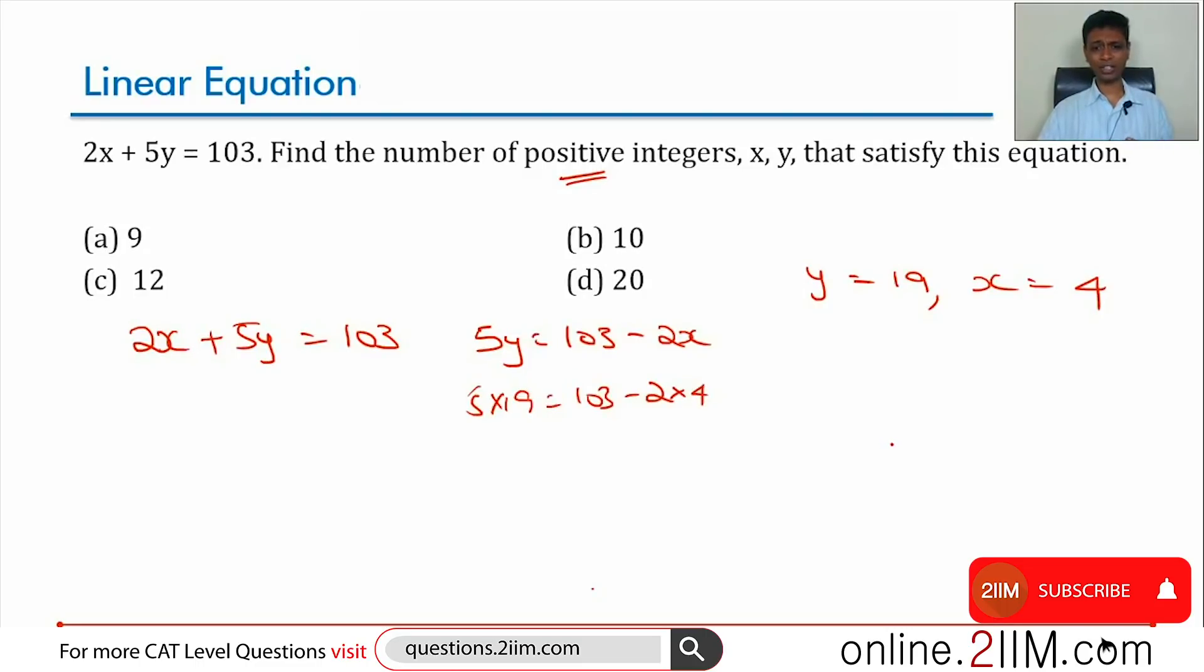Now if we increase x by say 1, we make x as 5, then this side drops by 2, y cannot be an integer. We increase x by 2, 2x drops by 4. This side drops by 4, 5y cannot, it is not a multiple of 5, so it cannot be an integer. I hope you are getting where I am going with this.